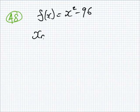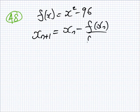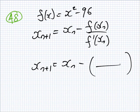So, the Newton-Raphson formula is this. For this one, the formula would be derivative on the bottom, that's 2xₙ, and then the function on the top, xₙ squared minus 96.